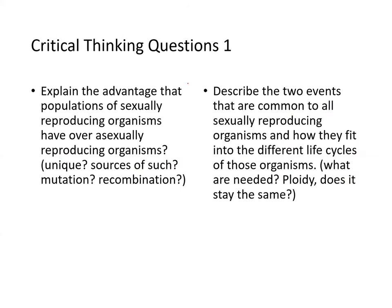Now some critical thinking questions. What is the advantage that sexually reproducing populations have over asexually reproducing organisms? Uniqueness — all gametes are unique. The sources of such uniqueness are crossing over, independent assortment, and mutation.